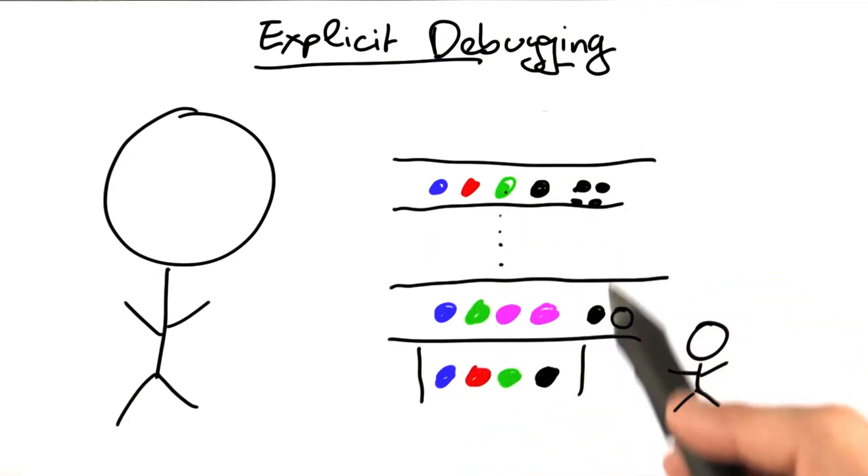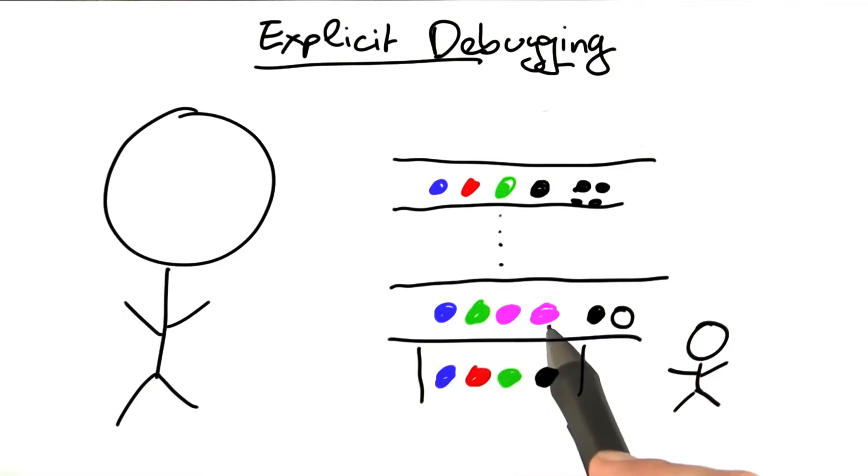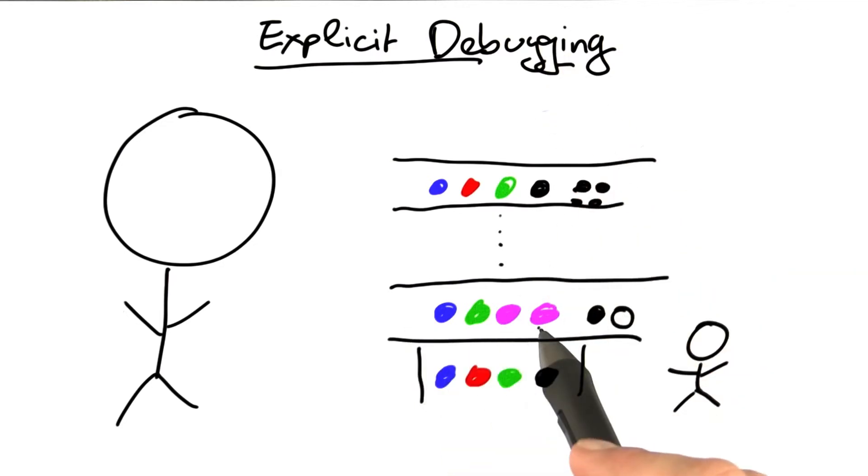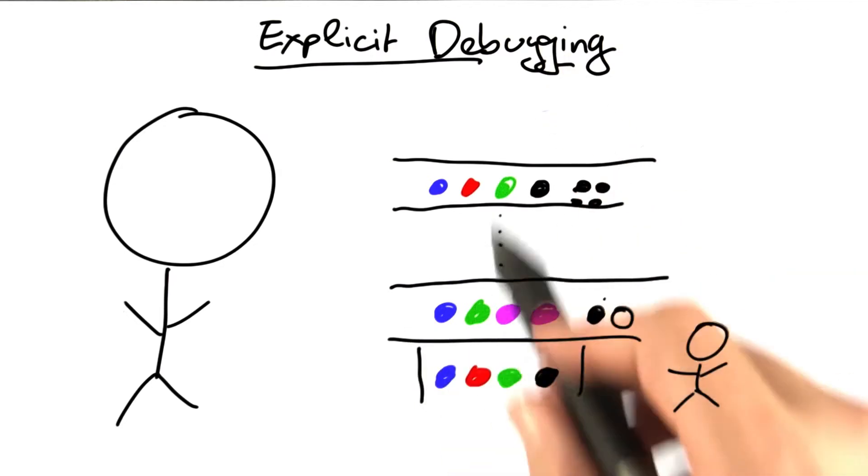When you're playing Mastermind, you always record what you tried before and what the result was. This is the same as explicit debugging. You write down what you do and what the result was, and this is what makes you effective.